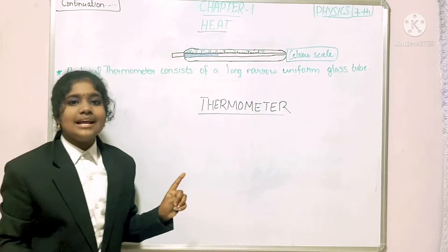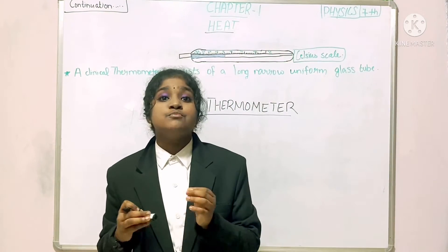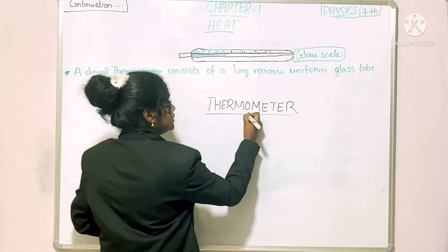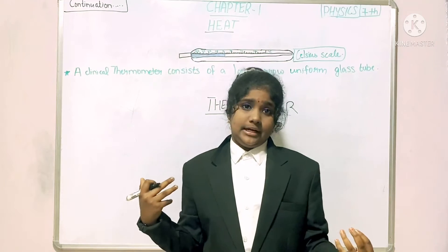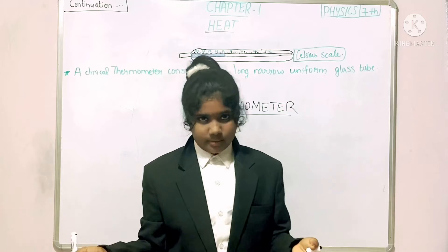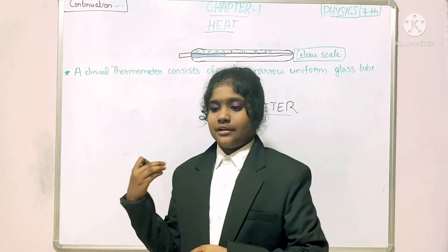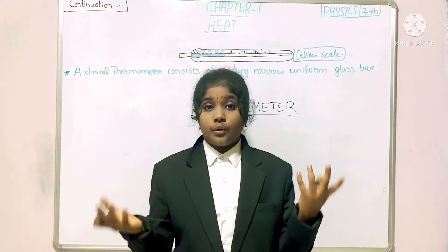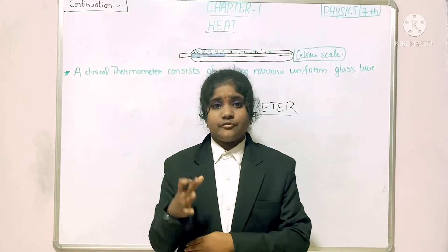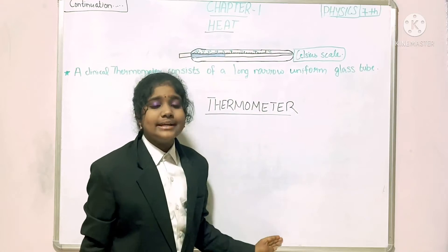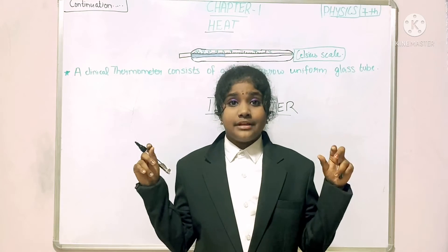So, a thermometer is a device used to measure the temperature of an object. Thermometers are divided into so many types — not only one. Doctors are using different thermometers: for a baby we use one type, for adults another, for measuring hot water another. But in seventh standard, in chapter one, we only study two types of thermometer.